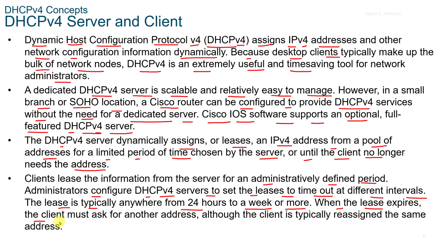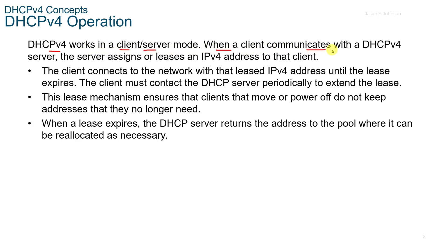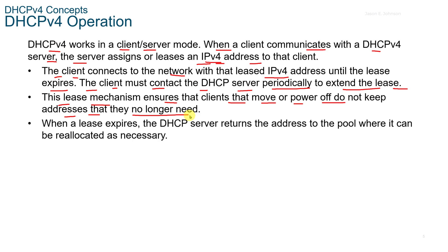When the lease expires, the client must ask for another address, although the client is typically reassigned the same address. DHCPv4 works in a client-server mode. When a client communicates with the v4 server, the server assigns a lease and an IPv4 address to that client. The client connects to the network with that leased address until the lease expires, and must contact the DHCP server periodically to extend it. The lease mechanism ensures that clients that move or power off do not keep addresses they no longer need. When a lease expires, the DHCP server returns the address to the pool where it can be reallocated.